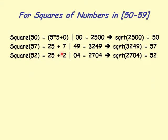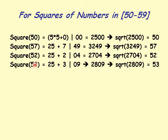Square of 52: 25 plus 2 on the left, and 2 squared is 4, but we need two digits so it's 04, giving 2704. Square root of 2704 is 52 — the pair of digits on the right and 25 plus 2 on the left confirms it. Square of 53: 25 plus 3 on the left and 9 on the right gives 2809. So square root of 2809 is 53.